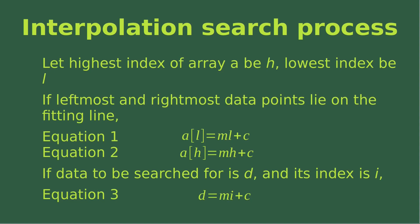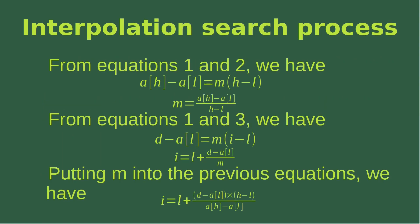Equation 3 is: d = mi + c. I put d and i into the straight line because the data point to be searched for should lie on that particular line. From equations 1 and 2, after interpolation, we find the value of m in terms of the high and low indices and their corresponding element values. Then from equations 1 and 3, we interpolate to find the value of i in terms of the low index, the slope m, the element of the low index, and the data d to be searched for. Substituting m gives the expression for i — the probable index position — in terms of l, h, a[l], a[h], and d.